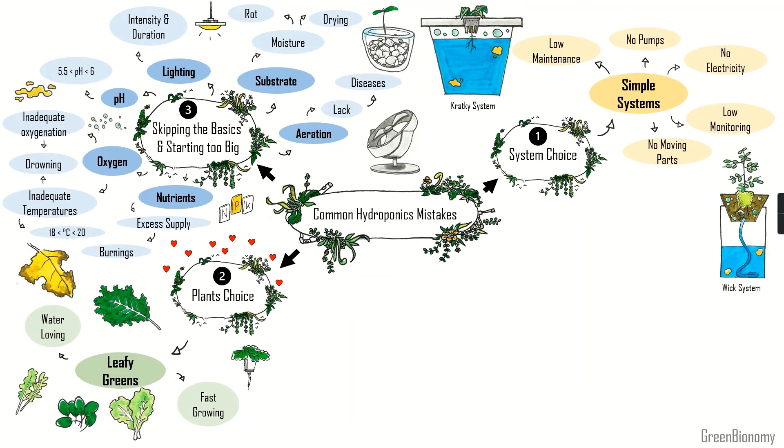Now let's move on to our fourth mistake, ignoring monitoring and maintenance. Delivering plant requirements in the right way will require monitoring and maintenance. The complexity of your maintenance schedule depends on the system you choose. For example, kratky systems are low maintenance. You set it up and forget it. In contrast, deep water culture systems require more attention and constant adjustments of pH, temperature, oxygen and other parameters.